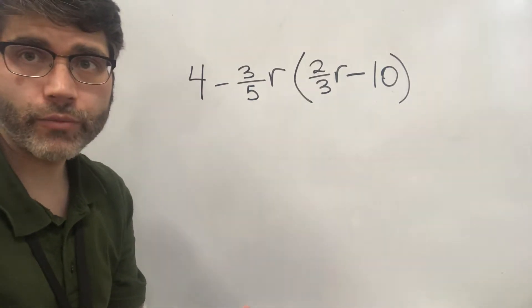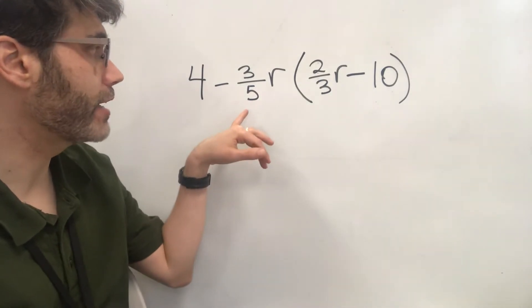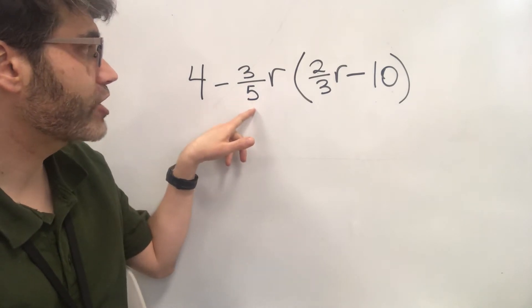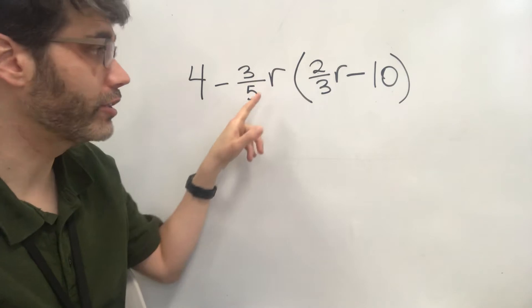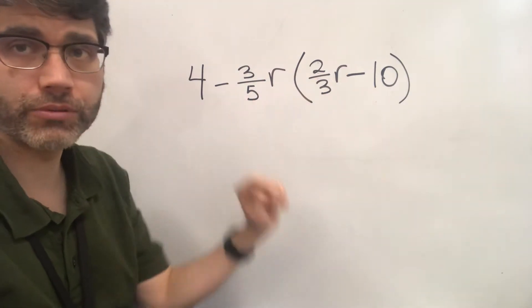So here we have an example where we are going to be distributing a fraction that is coupled with a variable over what's inside the parentheses.